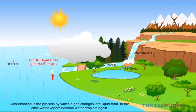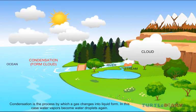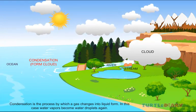Condensation is the process by which a gas changes into liquid form. In this case, water vapors become water droplets again.